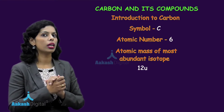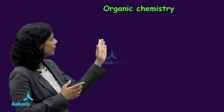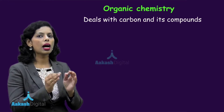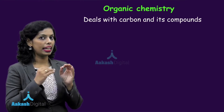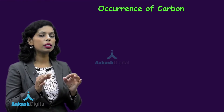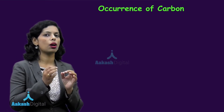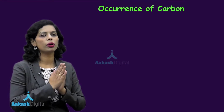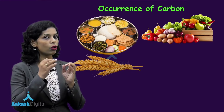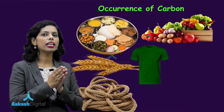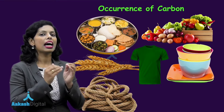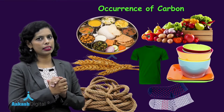I have told you that organic chemistry is the science that deals with carbon and its compounds, and then we discussed about the occurrence of carbon. This carbon is present around us in a number of ways — it is present in the form of food, in the form of daily goods, as well as in the form of different polymers and different articles.